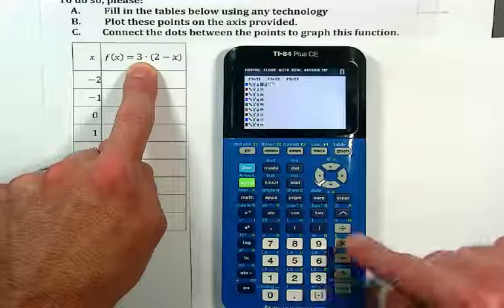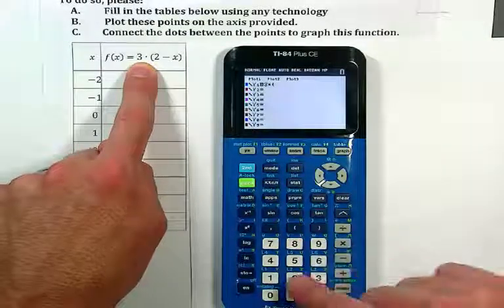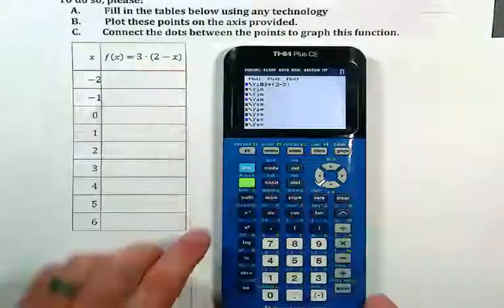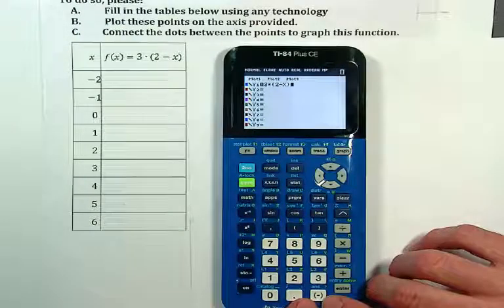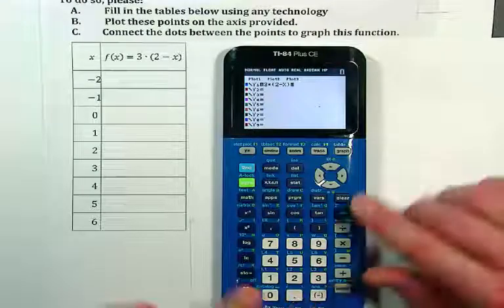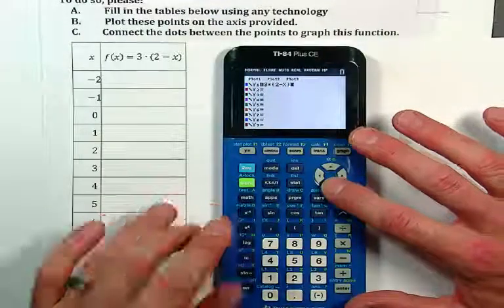In this case I'm going to go 3 times parentheses, 2 minus x. Notice this is the long minus right there, subtraction. This little thing on the bottom is a negative sign, and we'll see that in future videos. Now that I have this entered, what I really want to do is to check out my table.